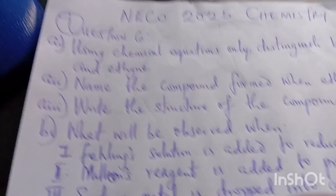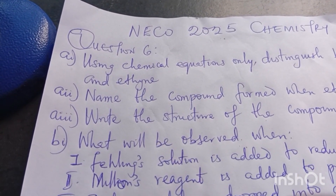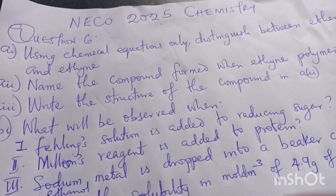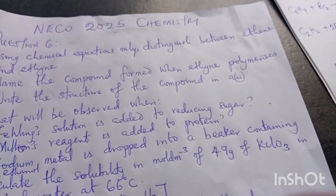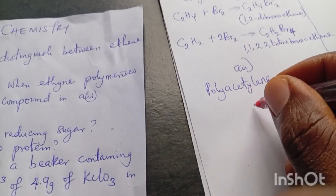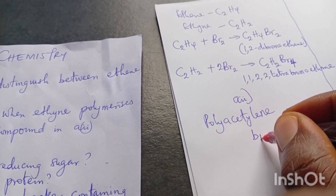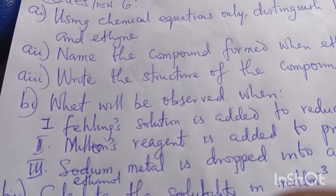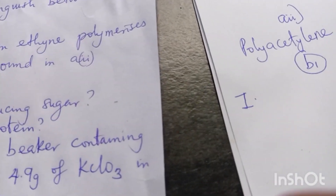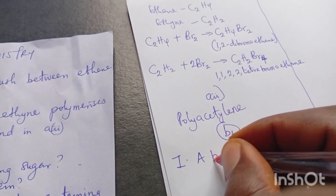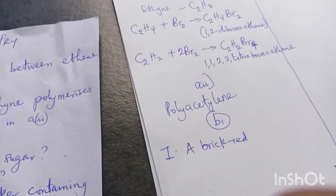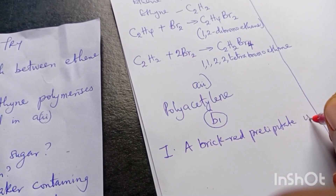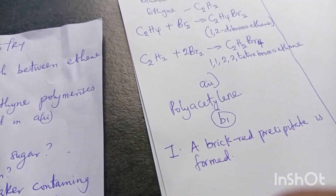Moving to part (b)(i): what will be observed when Fehling's solution is added to a reducing sugar? We are going to see a brick red precipitate is formed. It is not a practical class but I will tell you — a brick red precipitate is formed. That is what we observe.